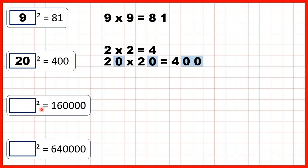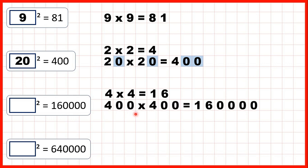But now we need to find the square root of 160,000. If we ignore our zeros for a moment, we know that 4 times 4 is 16. So that must mean that 400 times 400 is 160,000, because again, if we have four end zeros in a multiplication question, we need four end zeros in our answer. So 400 squared equals 160,000.